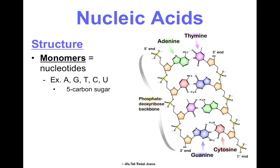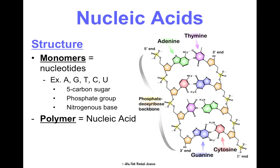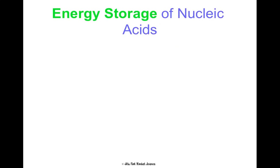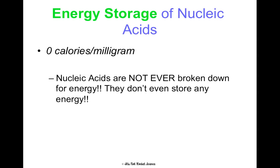These monomers, the nucleotides, are made of five-carbon sugars, phosphates, and nitrogenous bases — we'll talk about this more in our genetics unit. The polymer is just a nucleic acid: a bunch of nucleotides make up a nucleic acid. This picture here shows one nucleotide, and a bunch of those put together make up a nucleic acid. In terms of energy, there are zero calories of energy in a milligram of nucleic acid — they simply don't store energy, so they're never broken down for energy.